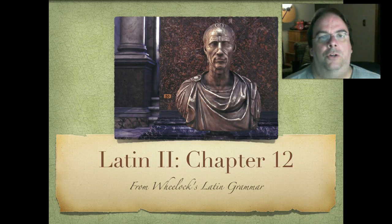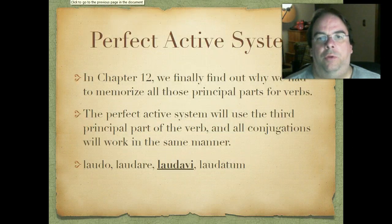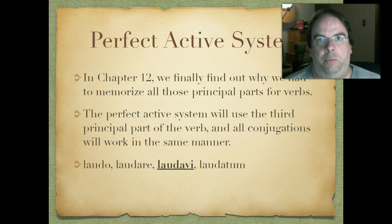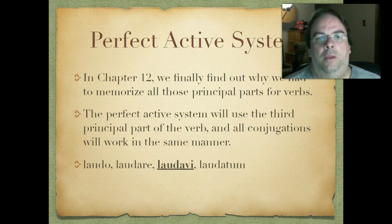In Chapter 12, we're going to be introduced to the perfect active system. In Chapter 12, we finally get to find out why we had to memorize all those principal parts for verbs. Like I told you throughout Latin 1, when you memorize the verbs, make sure you memorize all four principal parts, even though we only used two of them. That way you don't have to go back and relearn the principal parts we didn't cover in Latin 1. So hopefully you committed all those to memory. With the perfect active system, we're finally going to get to use that third principal part of a verb.